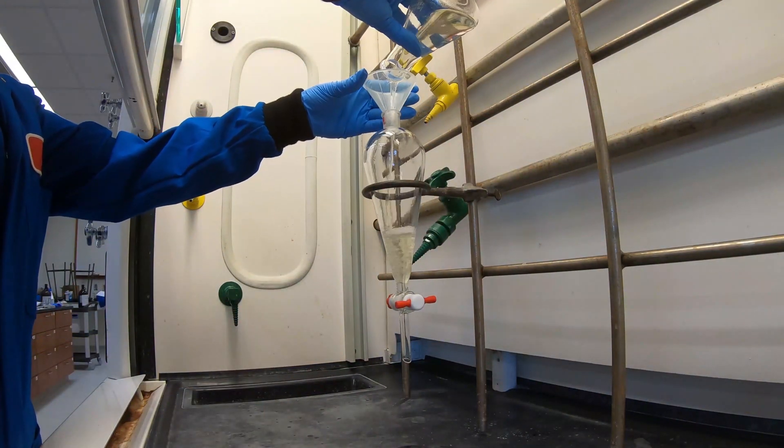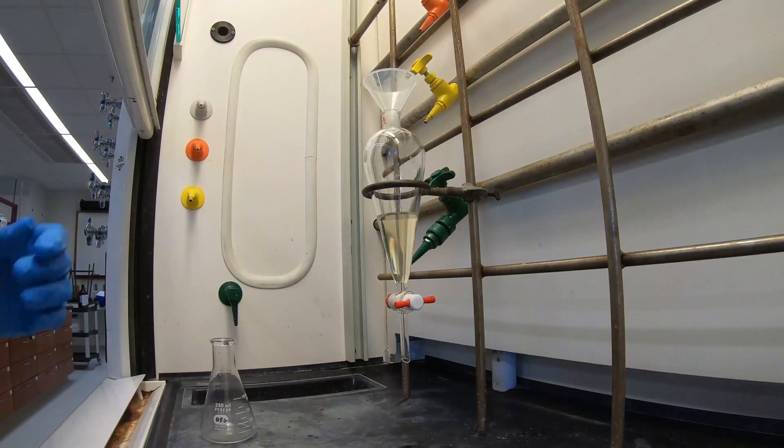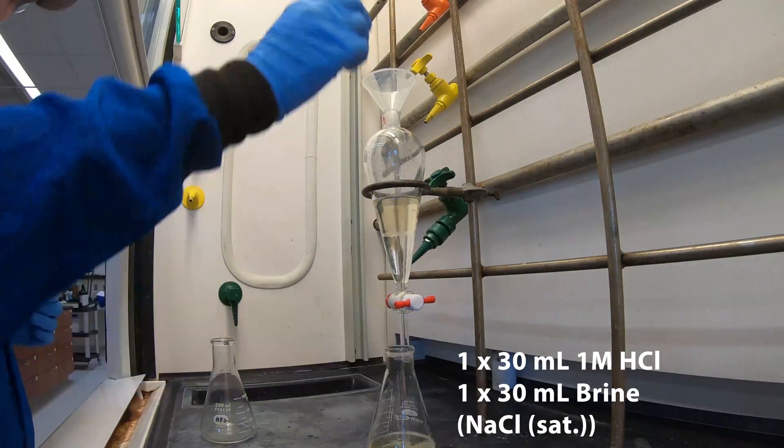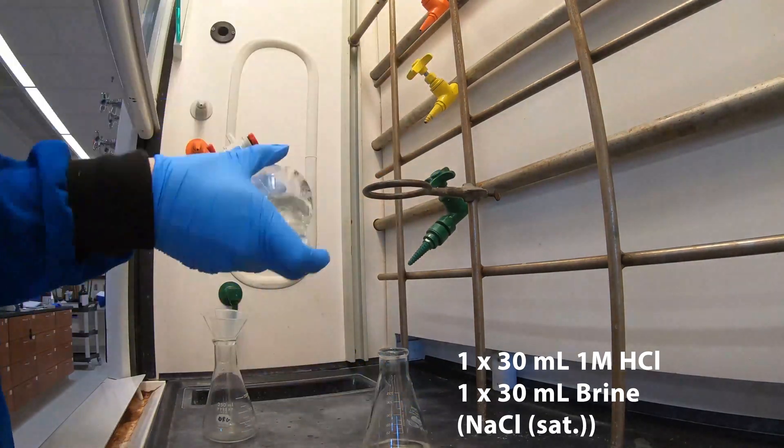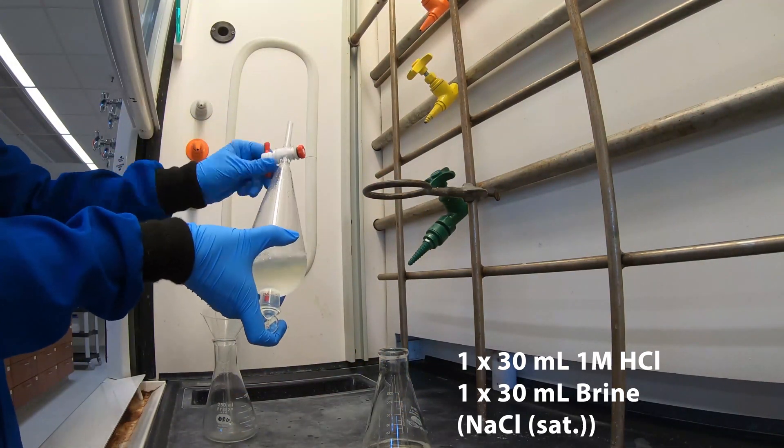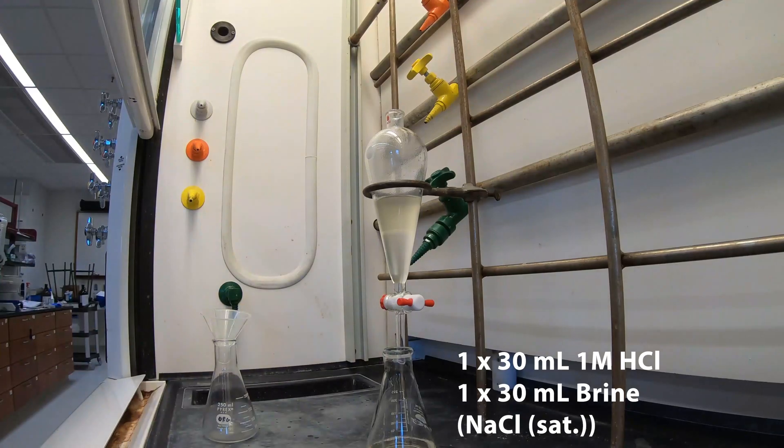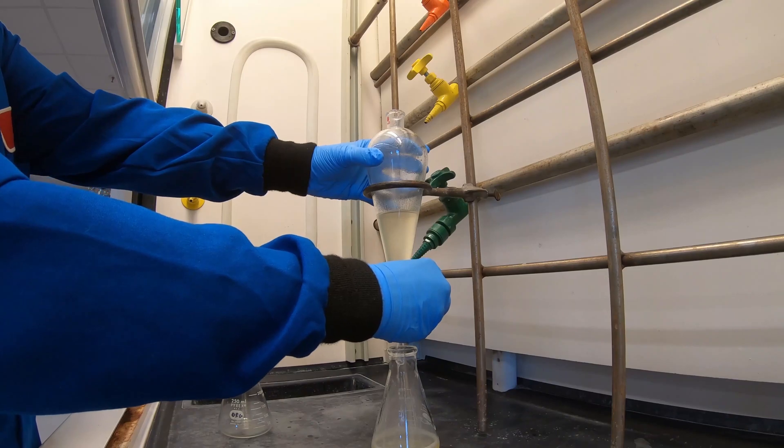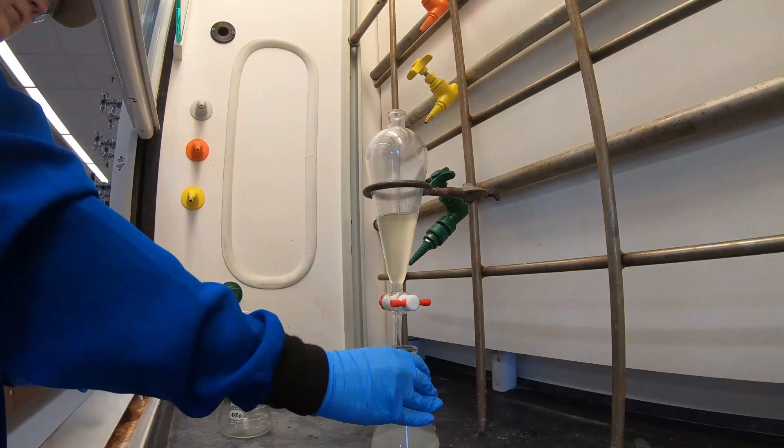Now we're going to transfer our combined ether washes to our separatory funnel. We're going to wash first with 30 ml of 1 molar hydrochloric acid. Collect the bottom layer in your aqueous flask. Then wash with 30 ml of saturated sodium chloride. Again, collect the aqueous bottom layer and then transfer your ether wash back to your Erlenmeyer flask.